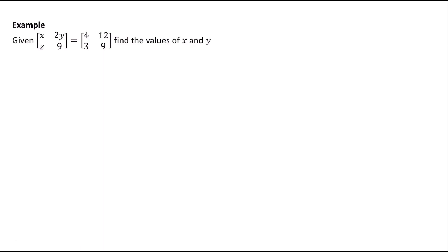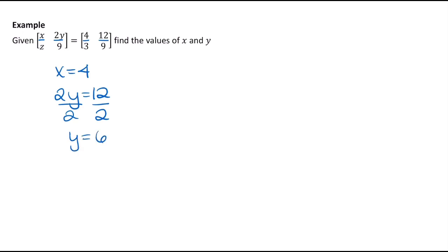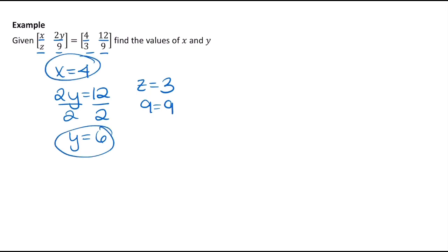Let's try this problem. We have two equivalent matrices, so everything in the same location is equal. We can say x equals 4. Then 2y equals 12, and dividing both sides by 2 gives y equals 6. Then z equals 3, and the last entry just confirms that 9 equals 9. So we can figure out x, y, and z.